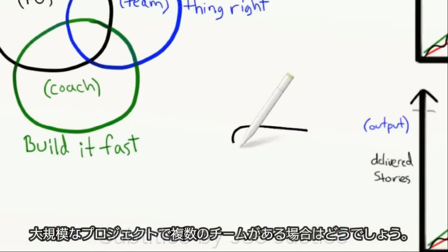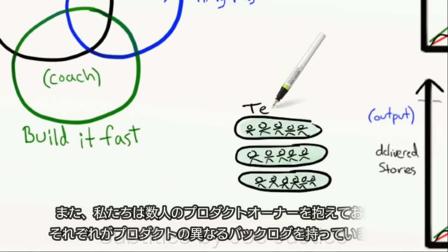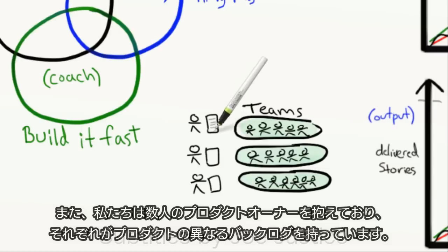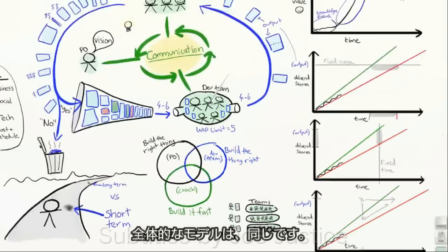Okay, what if we have a larger project with multiple teams, and we have several product owners, each with their own backlog for a different part of the product? Overall, the model is really the same.